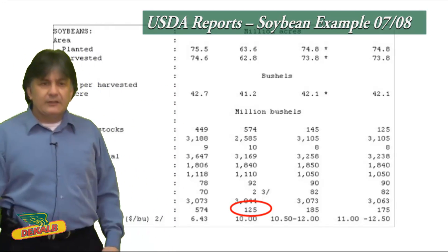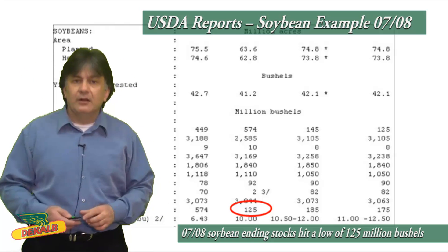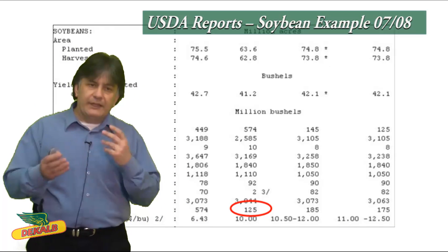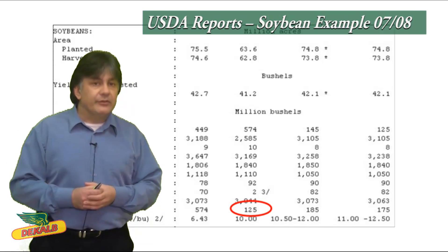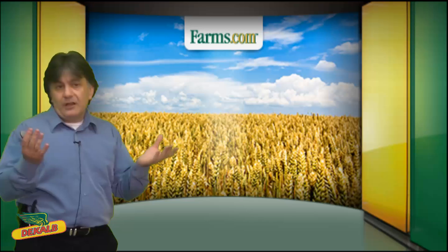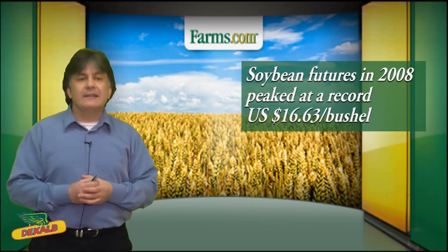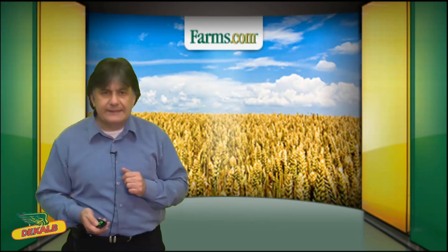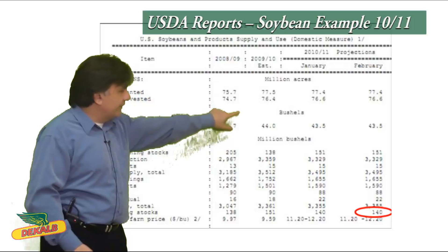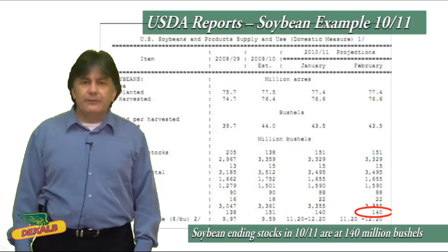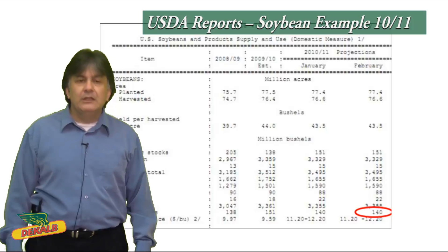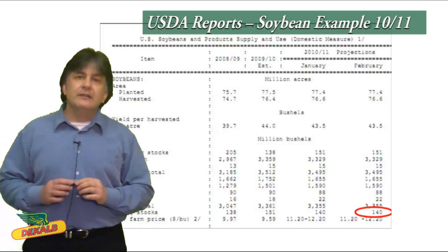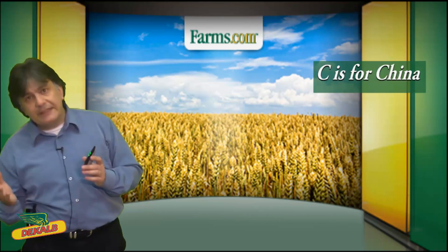Looking at soybeans, ending stocks for 2007-08 got as low as 125 million bushels. Scroll down in the monthly report to the US soybean supply and use balance sheet to find this data. That was a stocks-to-use ratio of 4.1%, and soybean futures peaked in 2008 at $16.63 a bushel. The 30-year low in soybean stocks-to-use ratio was 1.1% in June 1979. This year, ending stocks are down to about 140 million bushels — a 4.2% stocks-to-use ratio, very very low.